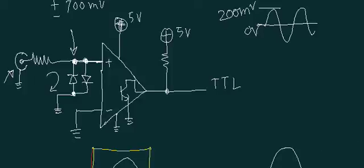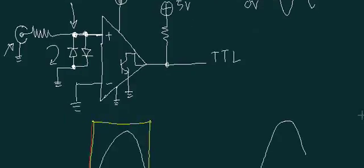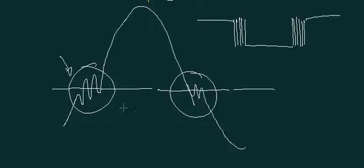And it gives clean output because it has some hysteresis. Schmidt trigger has some hysteresis. It will not allow the level to change frequently unless and until input reaches some level, it will not change the state.